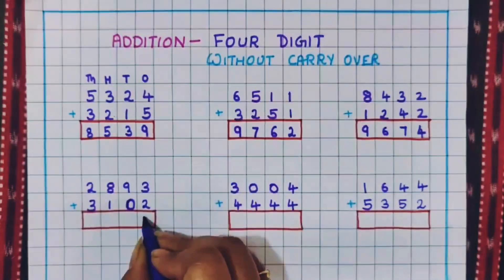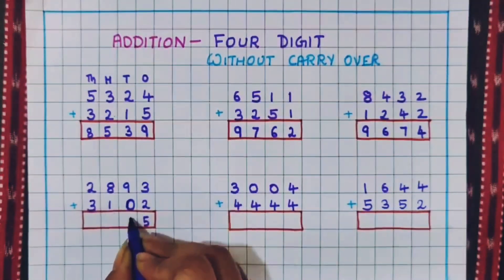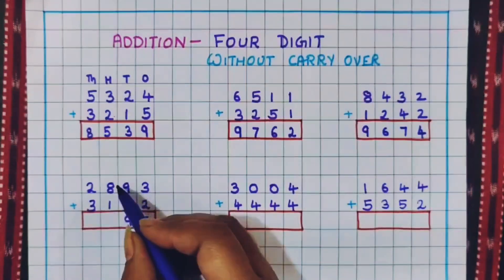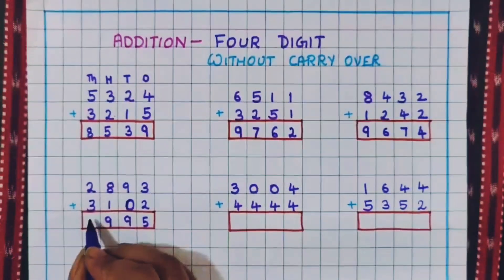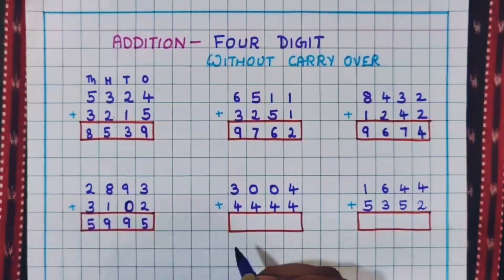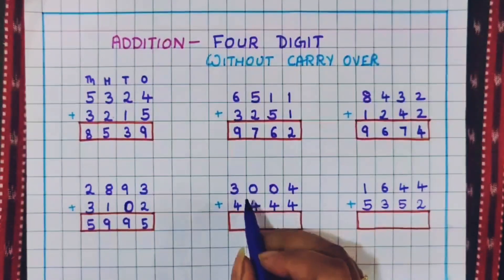3 plus 2 is 5. 9 plus 0 is 9. 8 plus 1 is 9. 2 plus 3 is 5. Now let's do the next one.